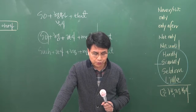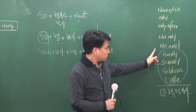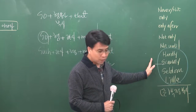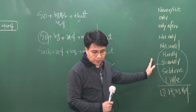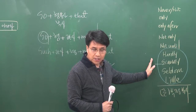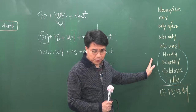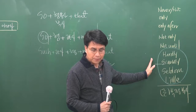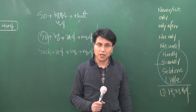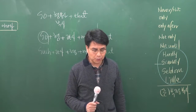Not until then did the team leave for the next destination. not until이 주어보다 먼저 나왔으니 도치구문 확인. did와 leave 사이에 주어가 들어가 있습니다. '그때가 되고 나서야 비로소 그 팀은 다음 장소로 향해 떠났다.'